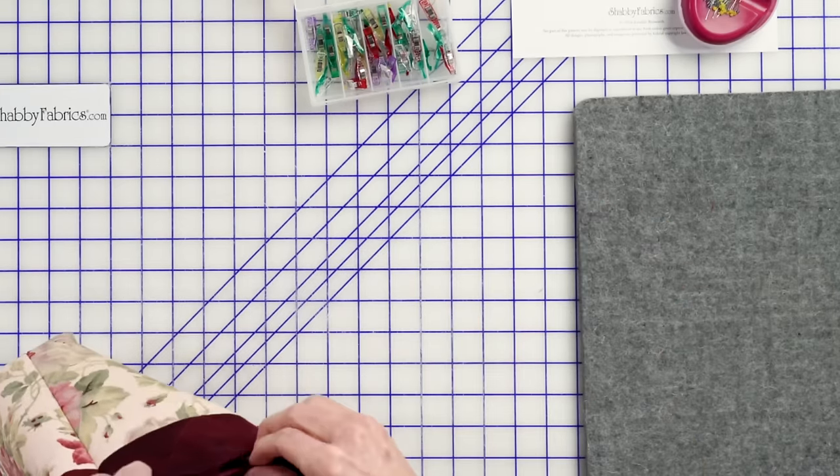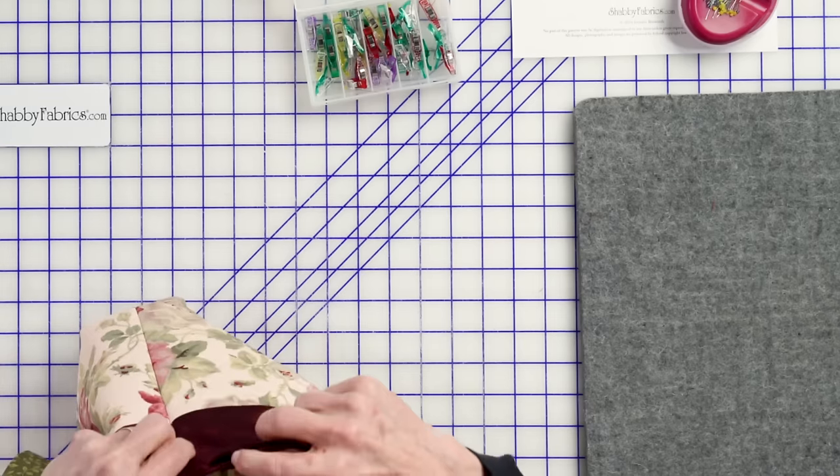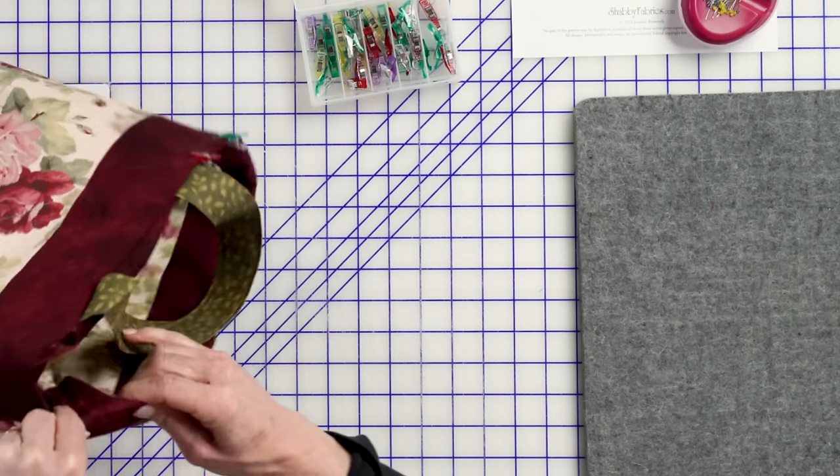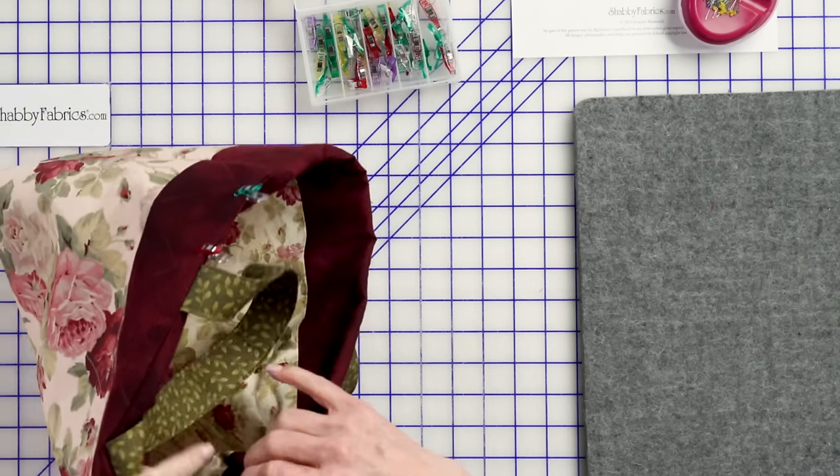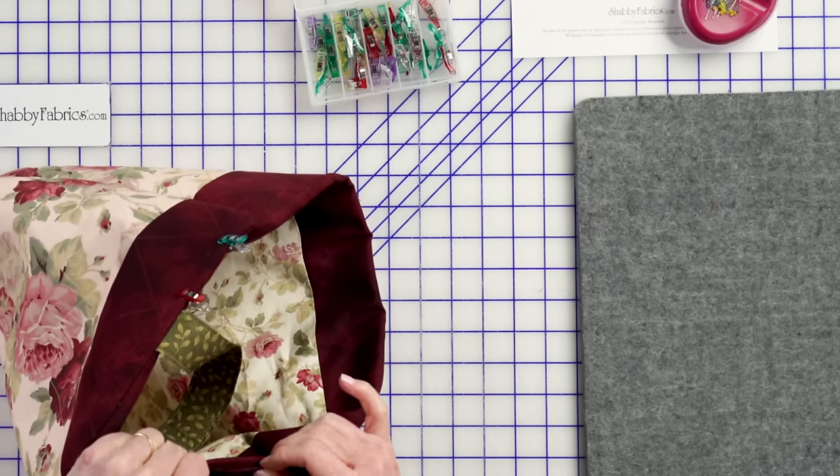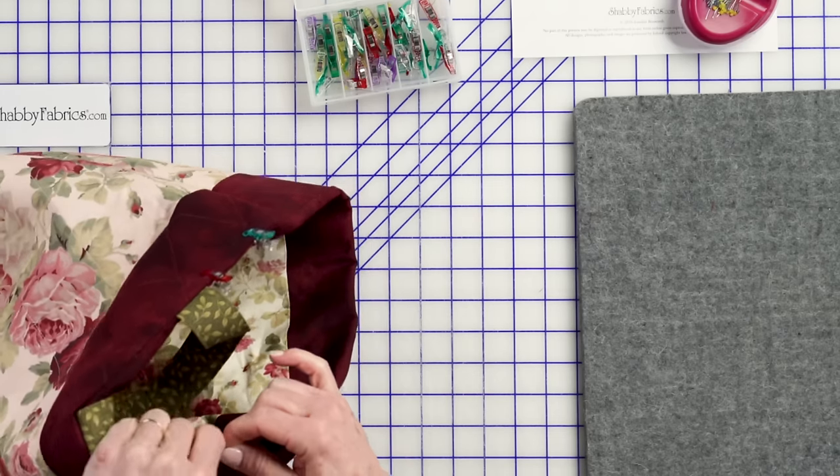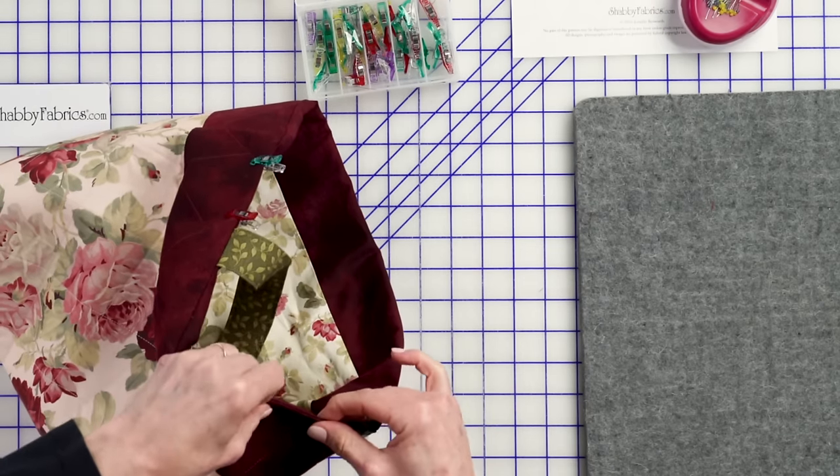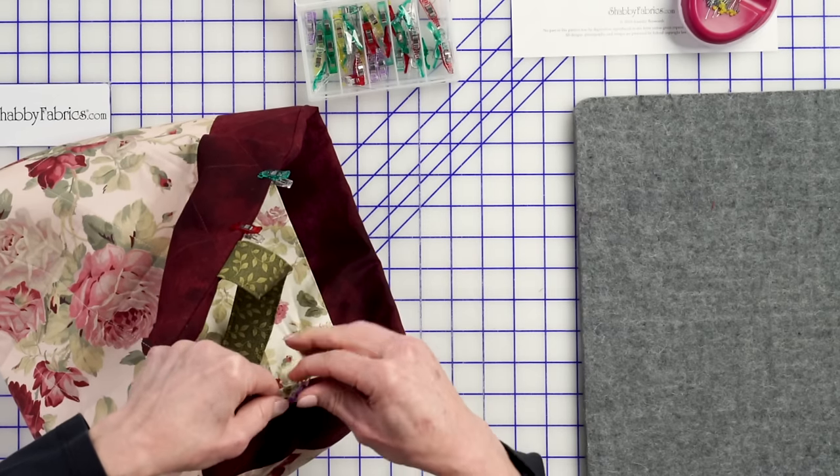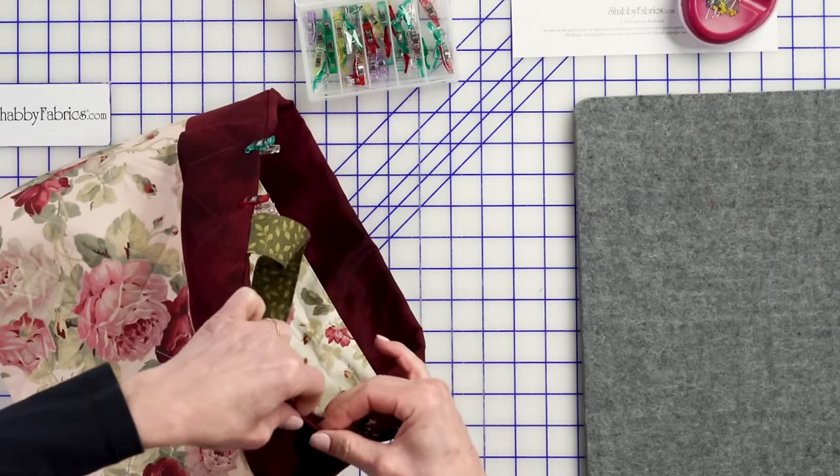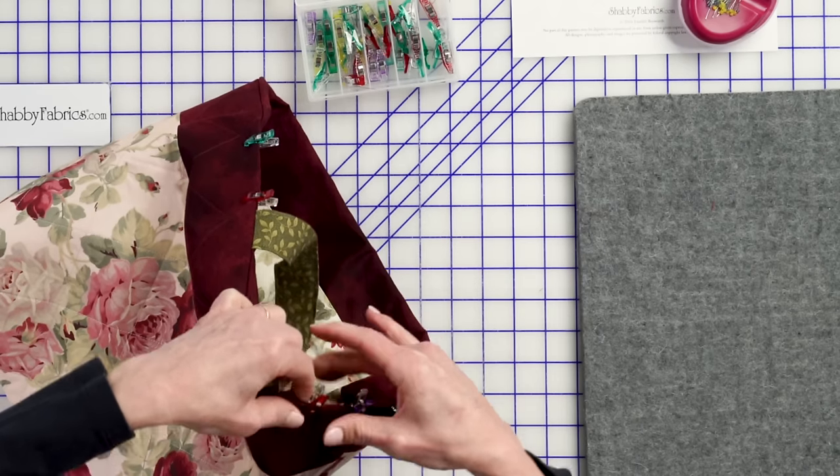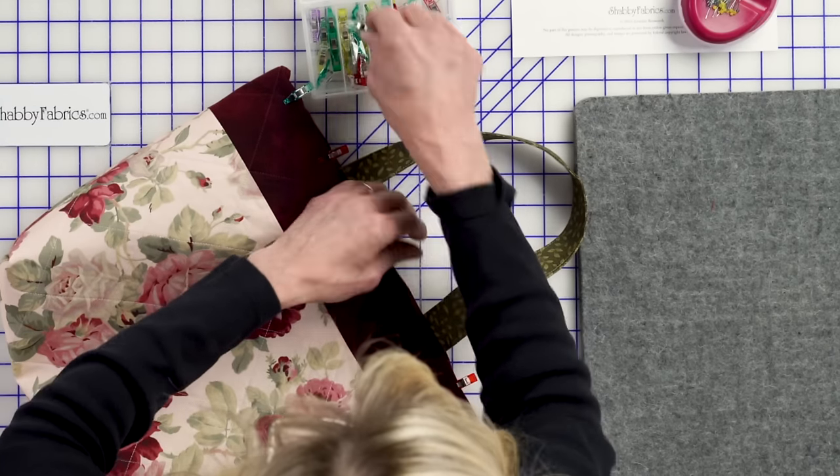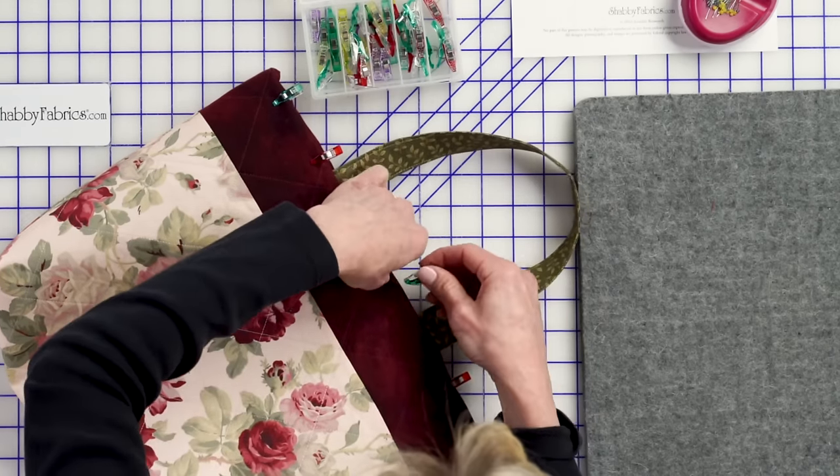So just like that. And we will bring those together. And again, we'll add our Wonder Clip in. This part just takes a little bit of extra time to get that opening closed, so that you're happy it looks good. And you continue around, just like that. Wonder Clipping all the way around. And then I'll grab the finished bag, and I can just show you what that's like.